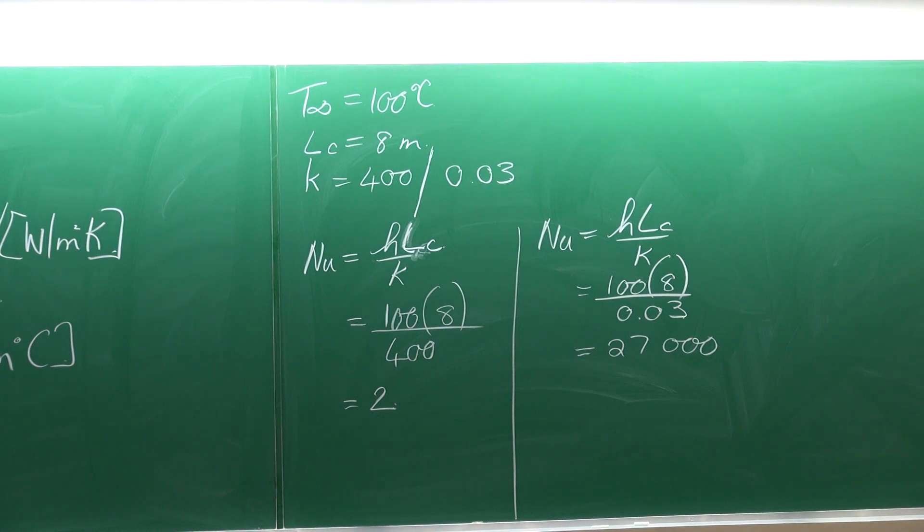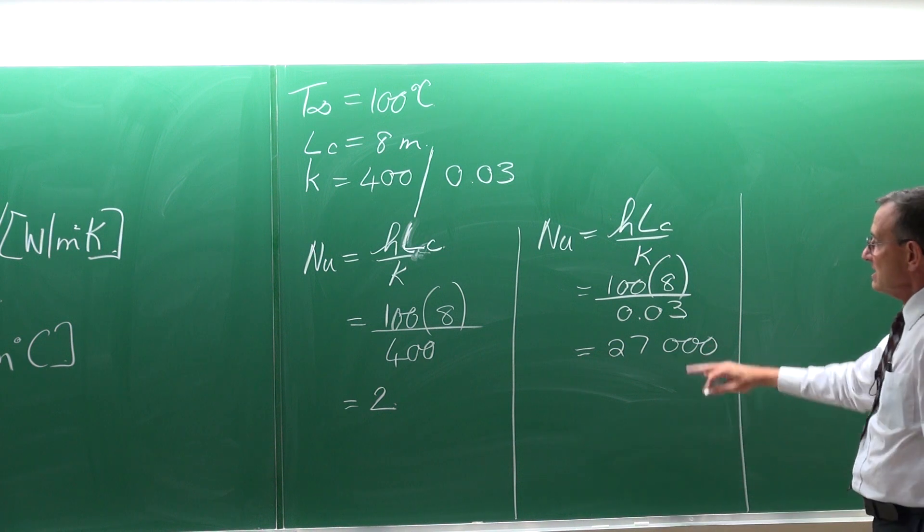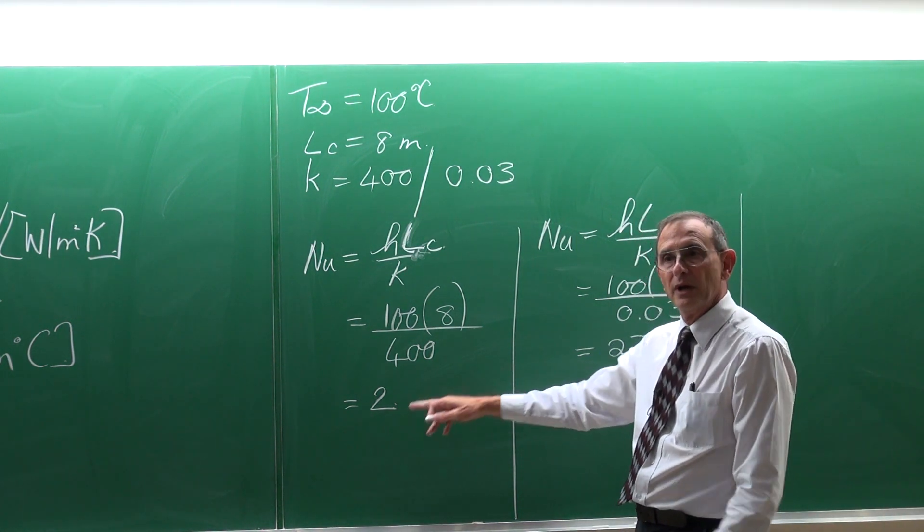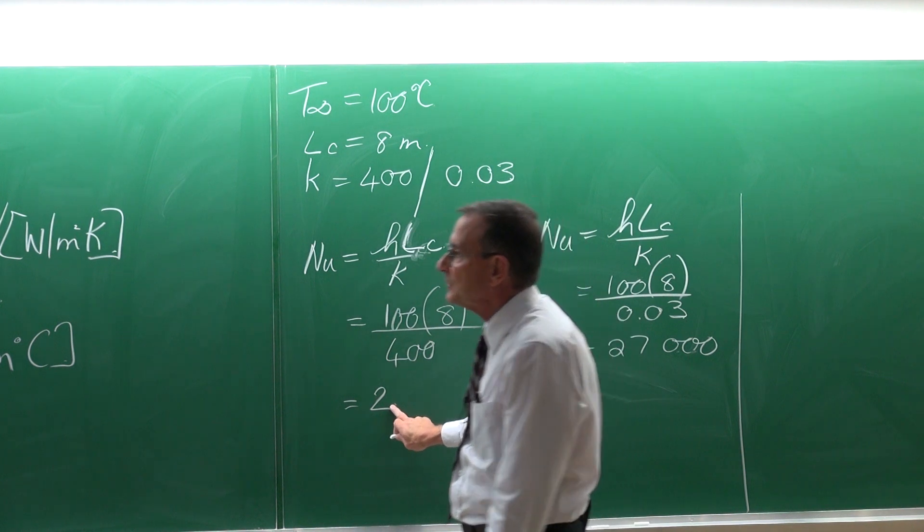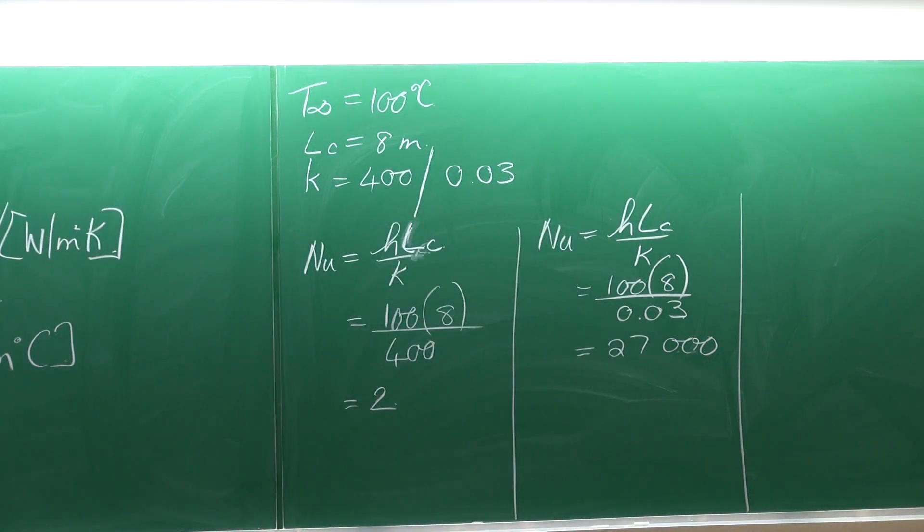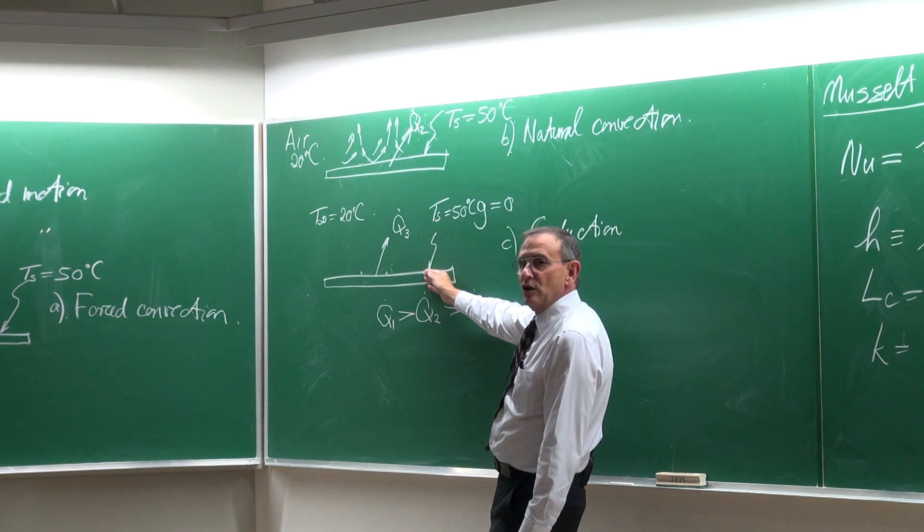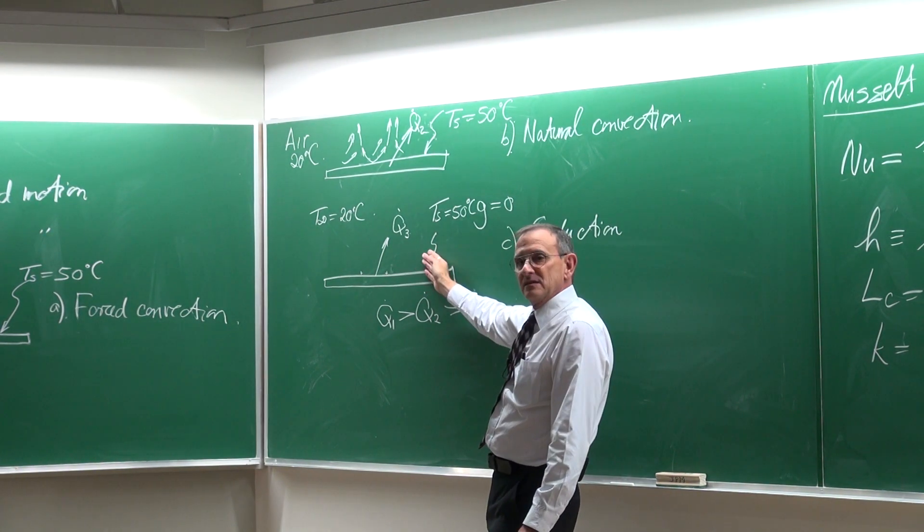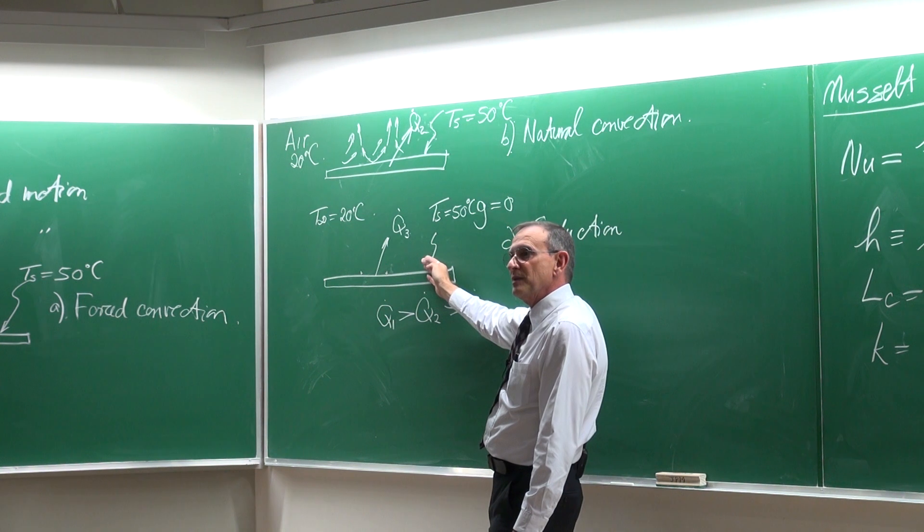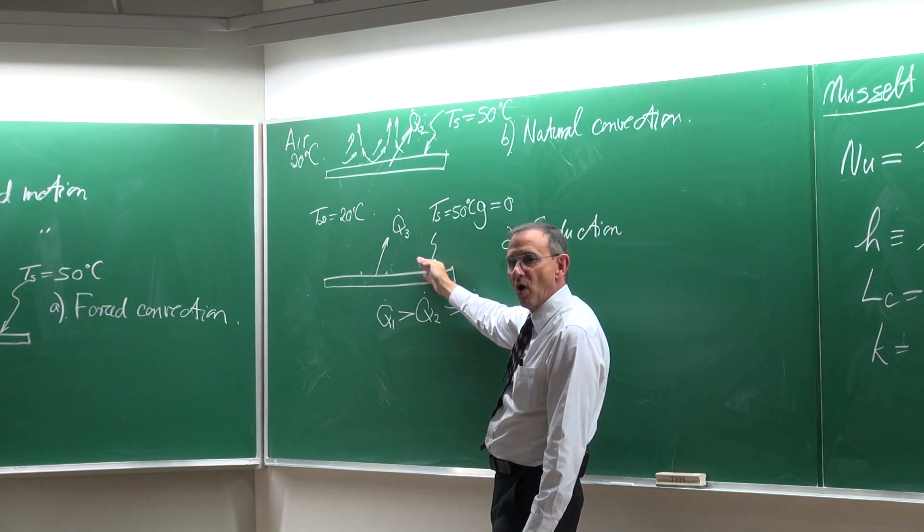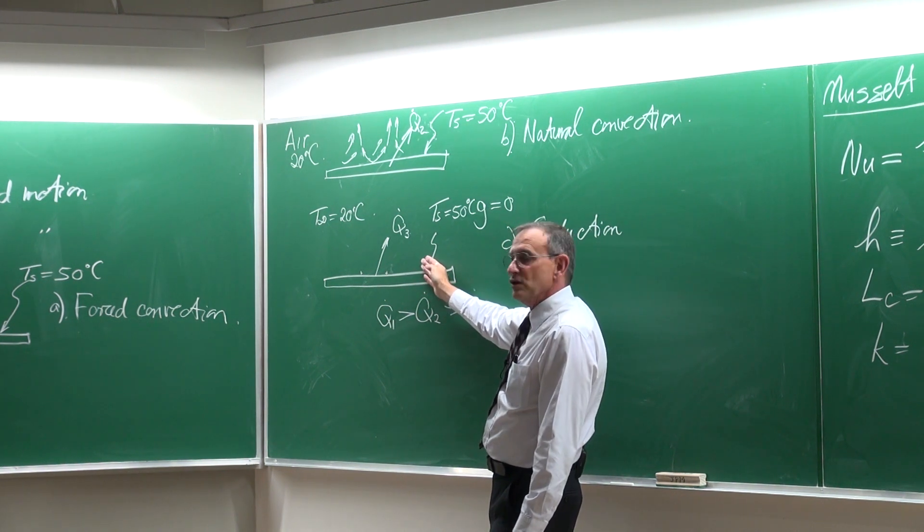What does it actually mean? It means that a Nusselt number of 2, and I'm going to get to it just now, would in terms of this conduction case as a reference.